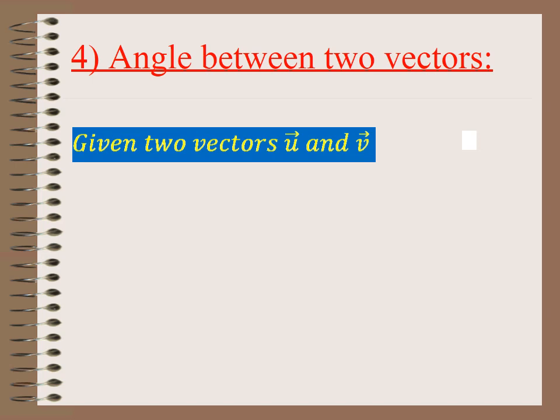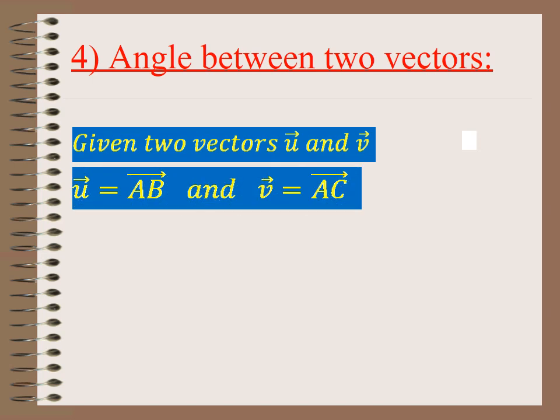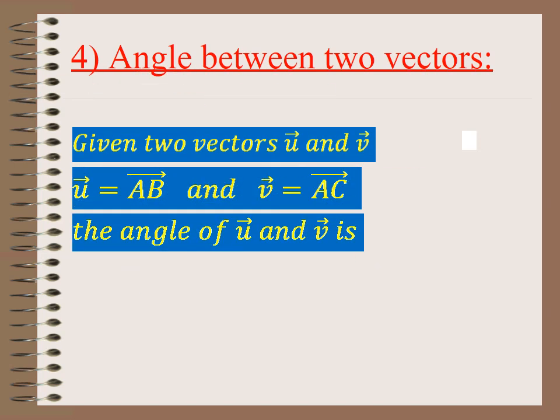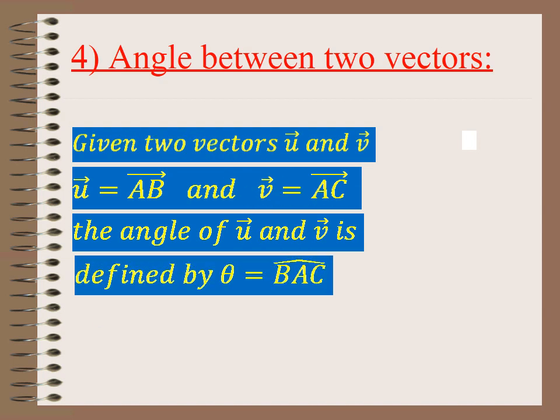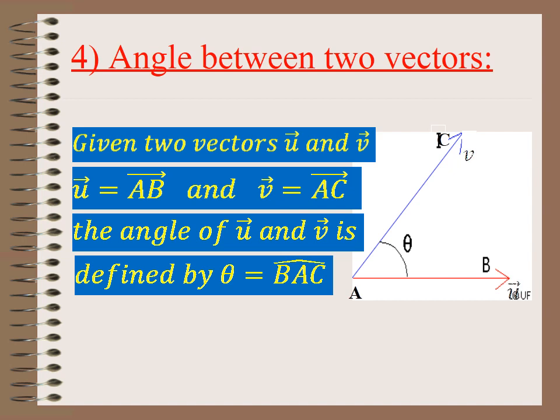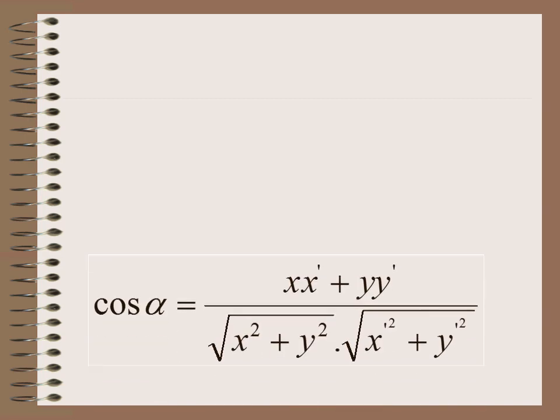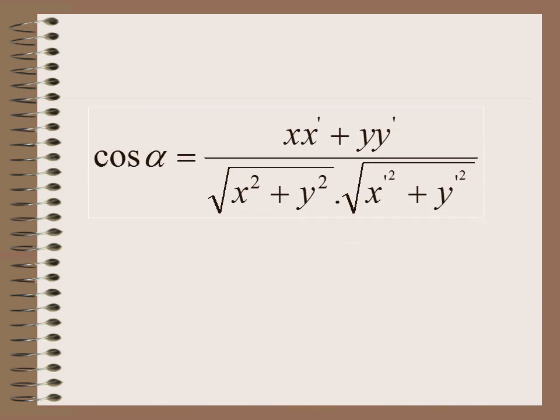What is the angle between two vectors? If I have two vectors u = AB and v = AC, the angle between u and v is defined by θ = angle BAC. The cosine of the angle is calculated as: cos θ = (xx' + yy') / (√(x² + y²) · √(x'² + y'²)), which uses the norms of both vectors.